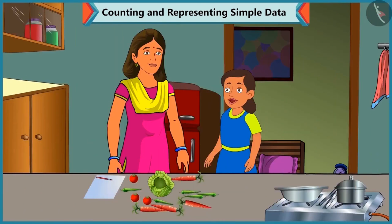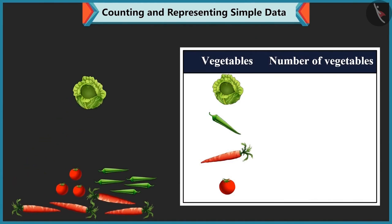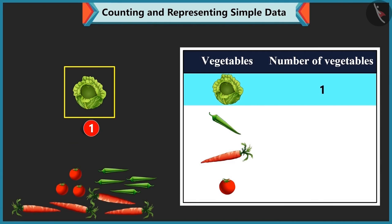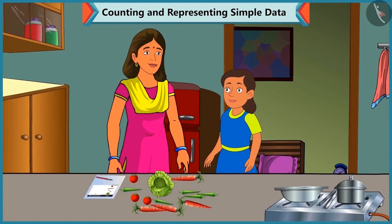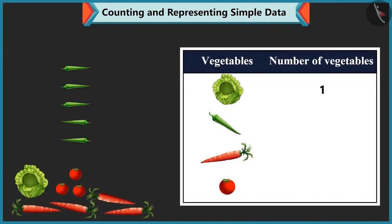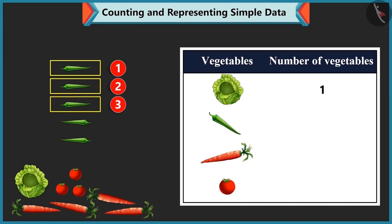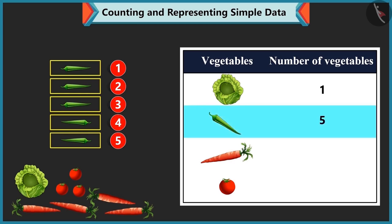Bubbly asks if she can help group the vegetables. Mummy says yes and explains: there is 1 cabbage, so we write 1 in front of cabbage. In the same way, count the remaining vegetables and write the number against each. Bubbly counts: 1, 2, 3, 4 and 5 green chillies, so we write 5 against green chilli.